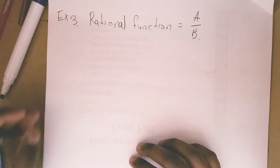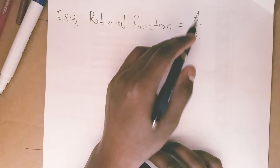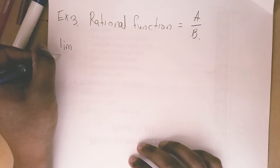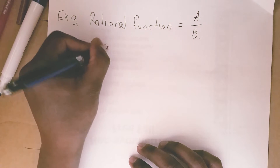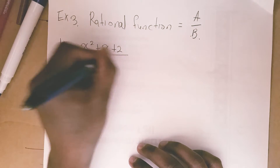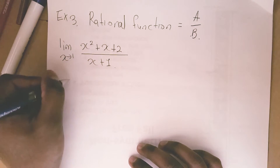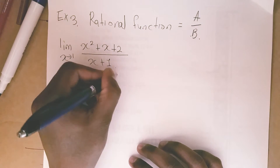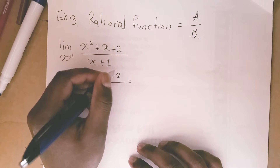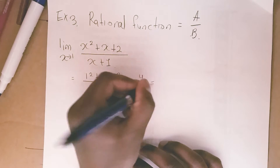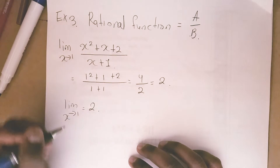Now we're going to go to rational functions. Rational functions are of the form a over b. For example, find the limit as x approaches 1 for (x squared plus x plus 2) divided by (x plus 1). You plug 1 into the function: you get (1 squared plus 1 plus 2) all over (1 plus 1), which is 4 over 2, equal to 2. So the limit as x approaches 1 is 2.